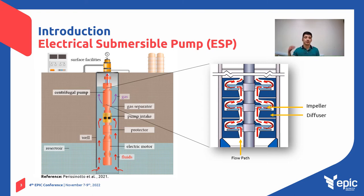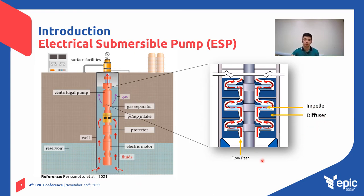The energy is added to the flow using a multistage centrifugal pump where each stage has a rotational component, the impeller, and a stationary component, the diffuser. The ESP offers additional energy to fluids and converts kinetic energy on the impeller into pressure energy on the diffuser.